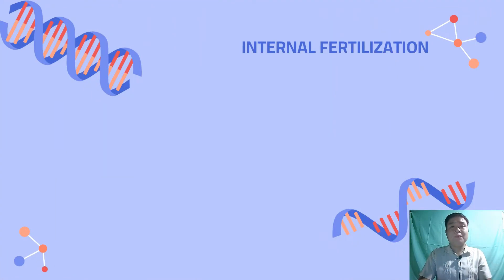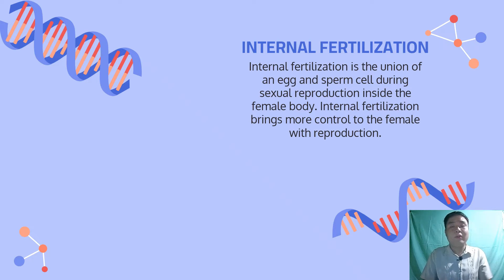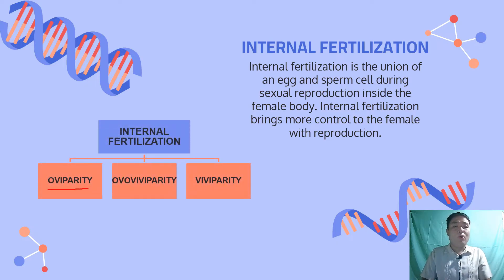The second type of sexual reproduction is internal fertilization. Internal fertilization is the union of an egg and sperm cell during sexual reproduction inside the female body. Internal fertilization brings more control to the female with reproduction. For internal fertilization to happen, there needs to be a method for the male to introduce the sperm into the female's reproductive tract. Internal fertilization has three types: oviparity, ovoviviparity, and viviparity.